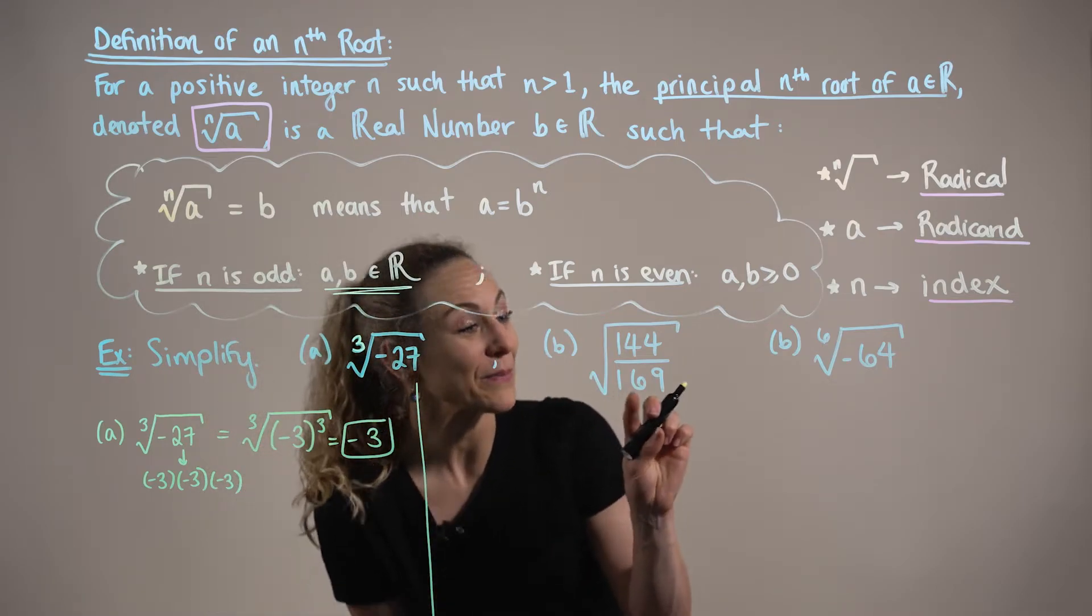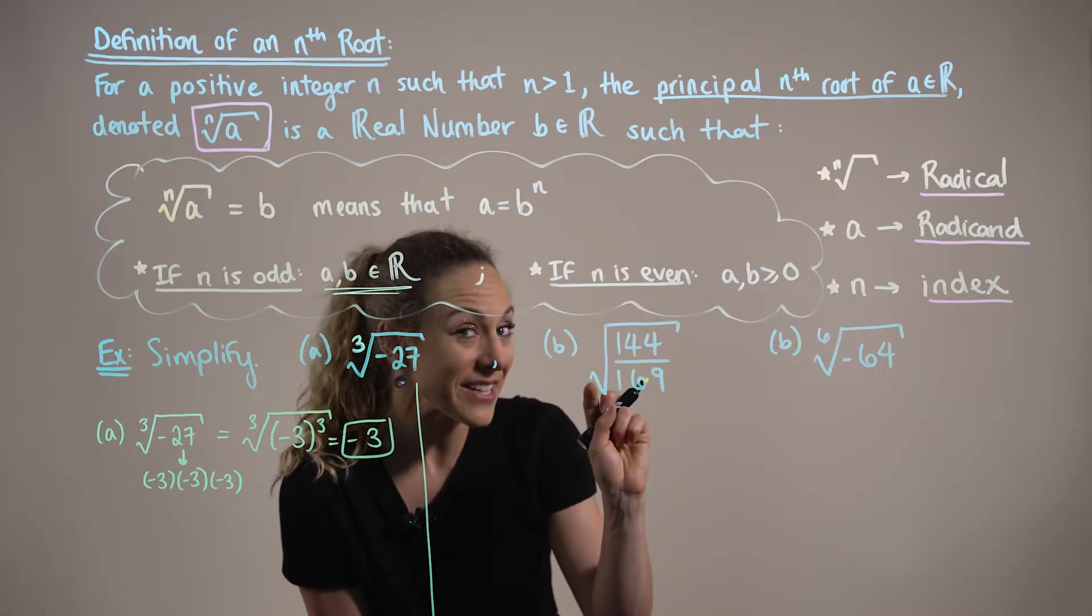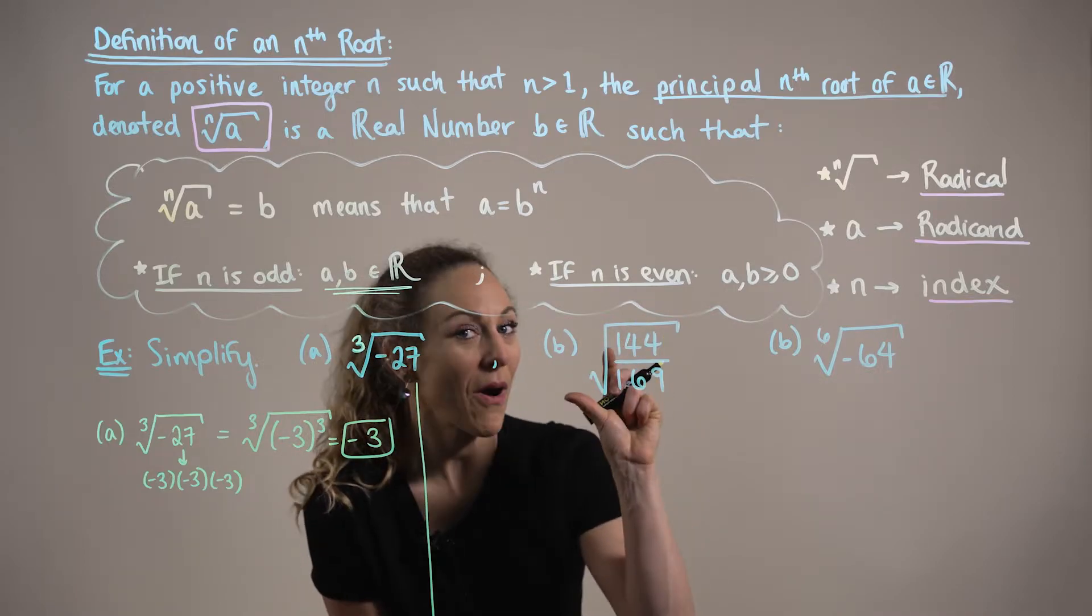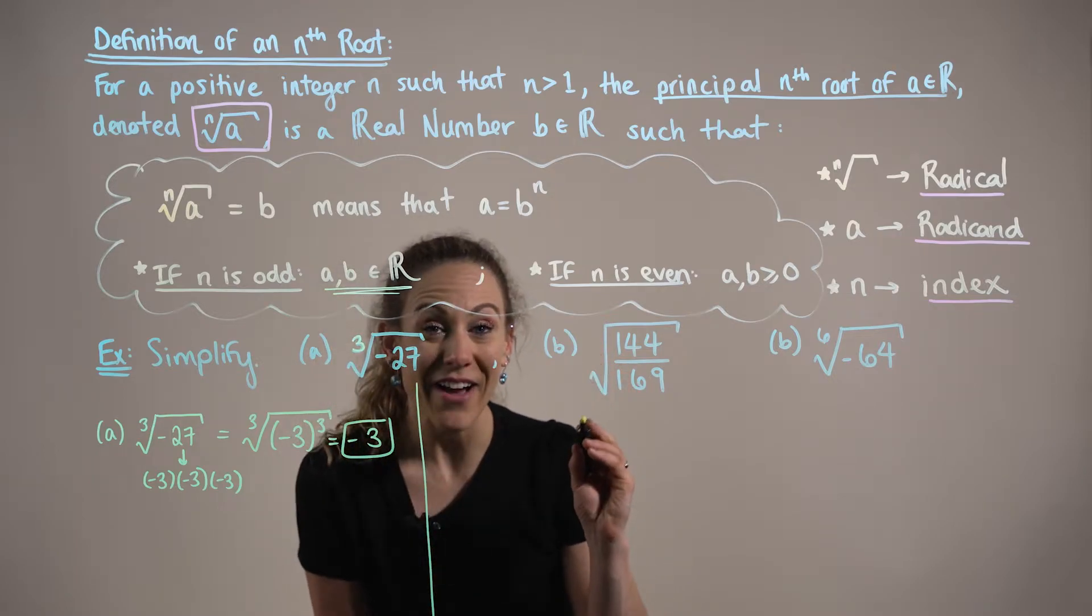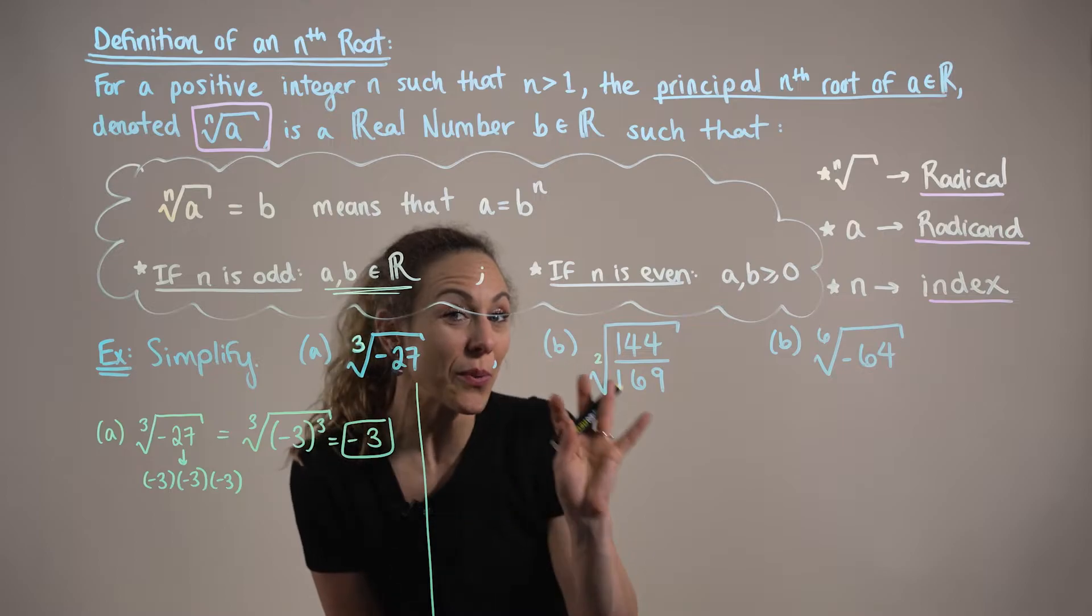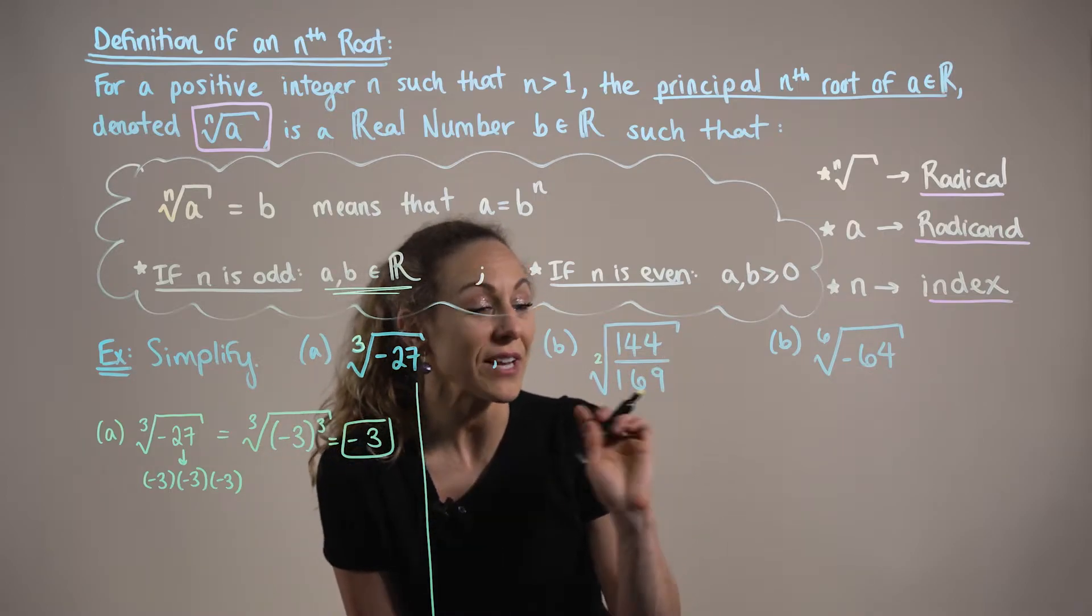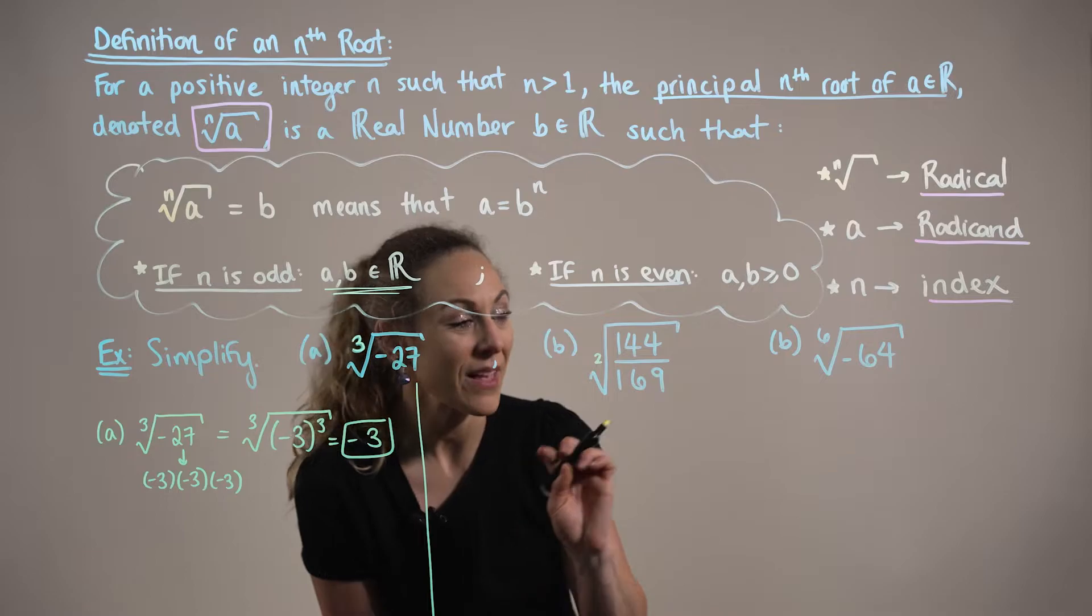Now, in part b, here, notice how we don't have an index. So, when the root pocket is empty, or appears to be empty, what we actually have here is a negative two. This is the square root of 144, all divided by 169.